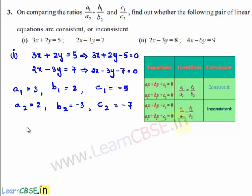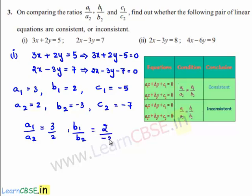So, let us find out the values of a1 by a2, which is 3 divided by 2, and b1 by b2 is equal to 2 divided by minus 3, which is nothing but minus 2 divided by 3. So, a1 by a2 is not equal to b1 by b2.